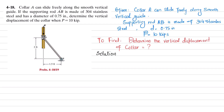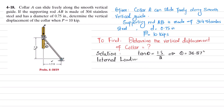Before finding internal loading, we need the angle theta that the supporting rod makes with the vertical axis. Tangent of theta equals perpendicular over base, which is 1.5 divided by 2. Solving this gives theta equal to 36.87 degrees.